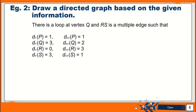We continue with Example 2: draw a directed graph based on the given information. This is a multiple edge and loop graph. For a multiple edge and loop graph, they will always tell you where the loop is and where the multiple edge is. For this question, the loop is at vertex Q and the multiple edge is at vertex SR. Observing the degrees given, we only have four vertices involved, so I'm going to draw four vertices. Then we start with the loop at vertex Q and the multiple edge at vertex SR.